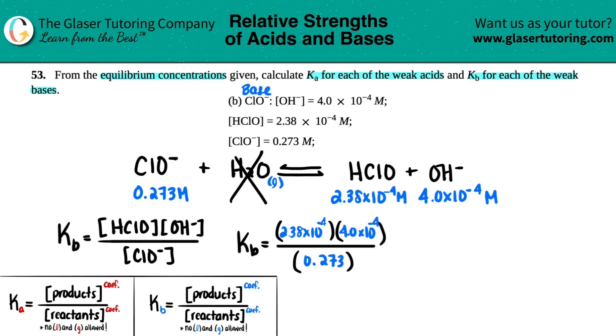Okay. Calc you out. Let's see what's going on. 2.38 times 10 to the negative fourth times 4.0 times 10 to the negative fourth, all divided by 0.273. And seems like lowest sig figs is 2 sig figs coming from the 4.0. So I should show 2 sig figs. So 3.5 times 10 to the negative seventh. Very, very weak. That's a low Kb value.